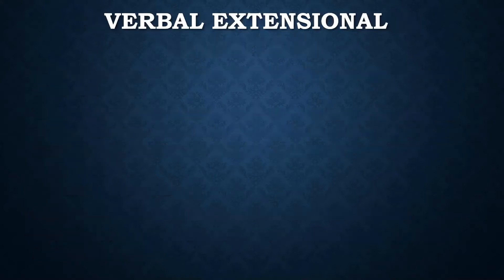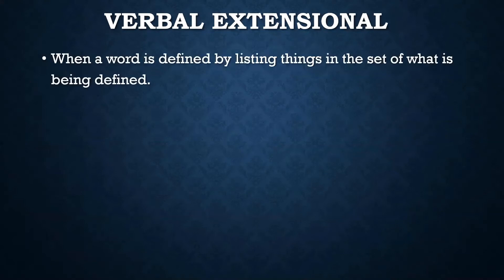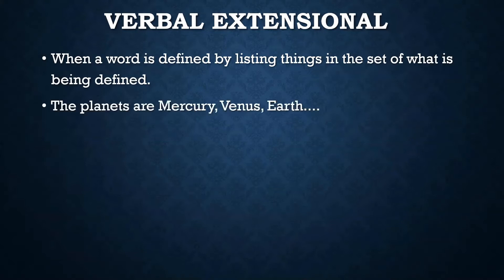Verbal extensional definitions are when somebody defines a word by listing things in the set of what's being defined. You might say the planets are Mercury, Venus, Earth, Mars, Jupiter, Saturn, Uranus, Pluto, etc. — you provide the list that's needed.